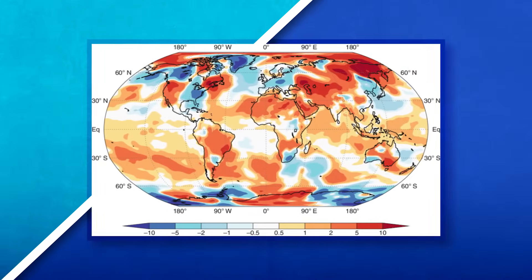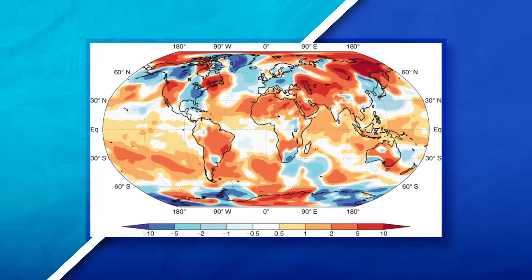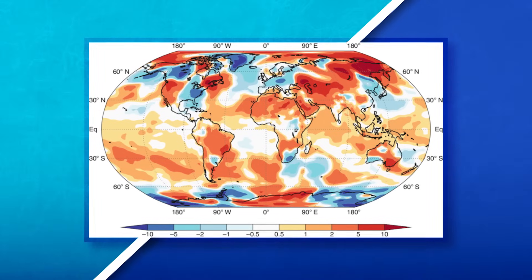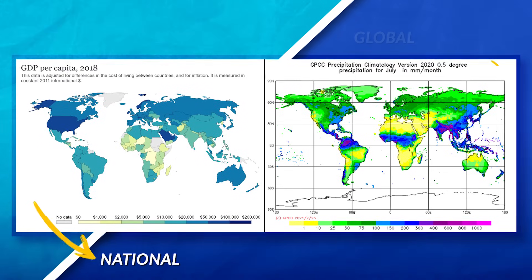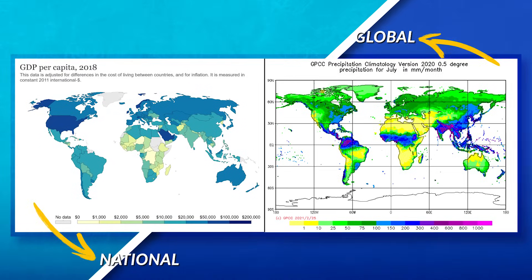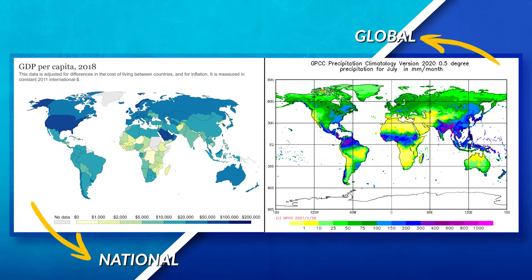This next map is again a global scale map, but notice how the country's boundaries are not being utilized — the data is not connected to any state's borders. Since the data shows global patterns that have nothing to do with any one country, this is a global scale of analysis on a global scale map. A lot of students get confused between national and global scale of analysis, so always check whether country boundaries are playing a role in the data presentation. If they are, it's probably the national scale of analysis.